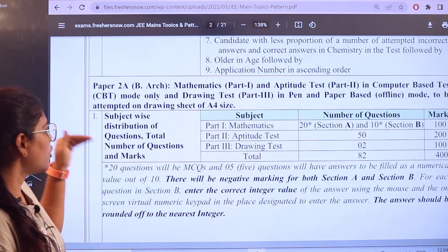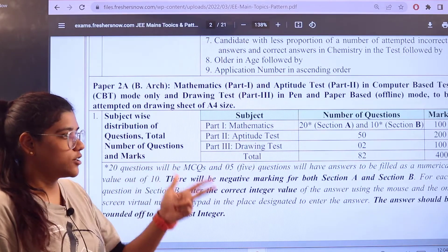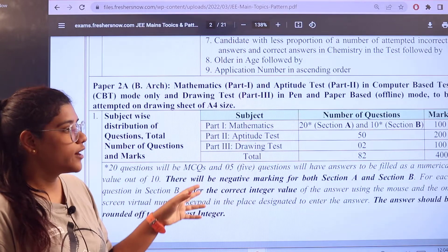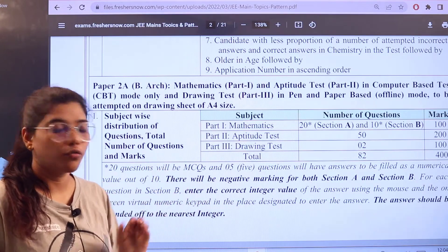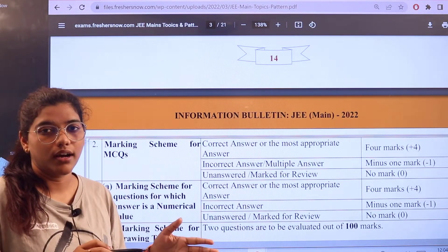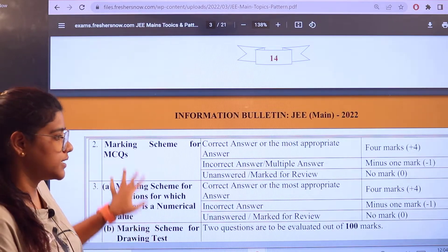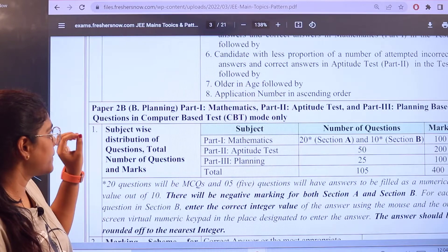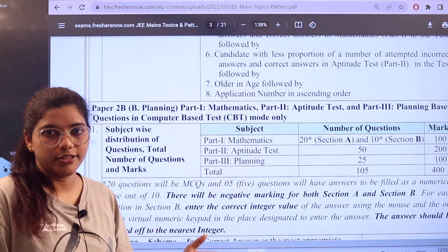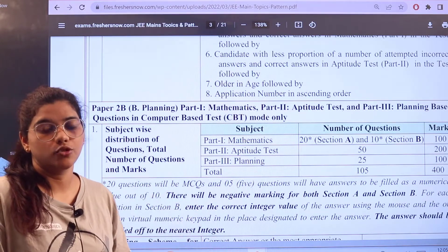Now for Paper 2A which is B.Arch, you have Mathematics, Aptitude Test and Drawing Test. Section A you have 20, Section B you have 10 questions, total you have 82 questions for 400 marks. The marking criteria is the same: 4 marks for every correct answer, wrong answer minus 1, numerical value has no negative marking, unanswered questions zero. Next it is for Paper 2B which is Planning. Mathematics, Aptitude Test and Planning, you have 20 questions in Section A and 10 questions from Section B, 105 questions in total carrying for 400 marks. So this is the marking criteria.